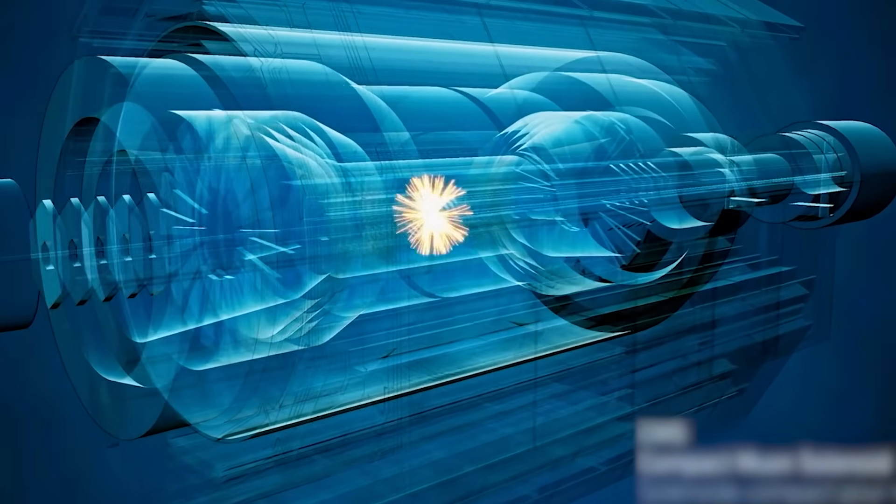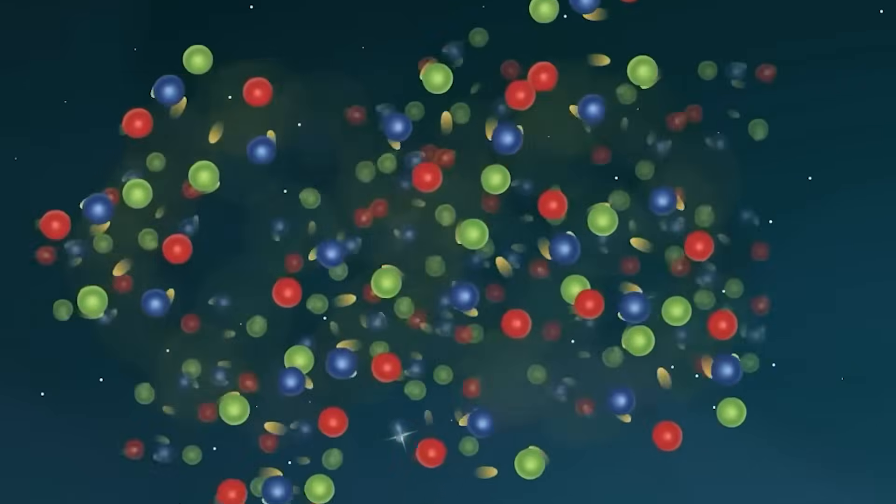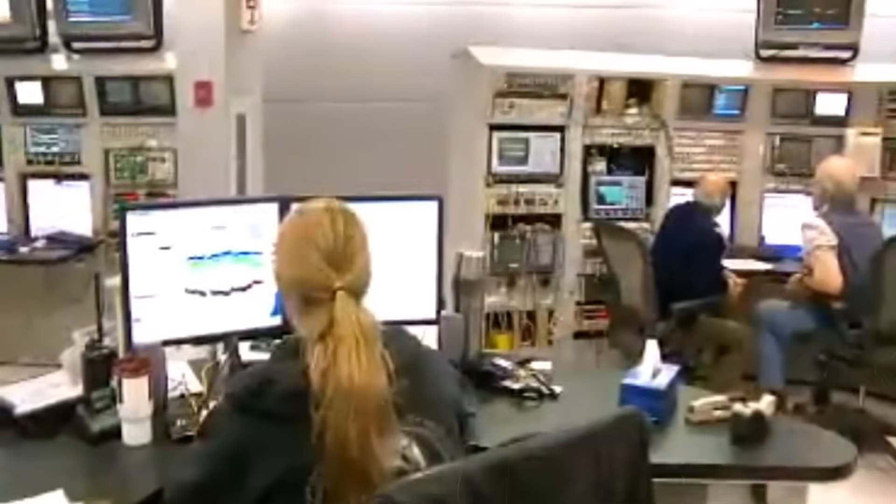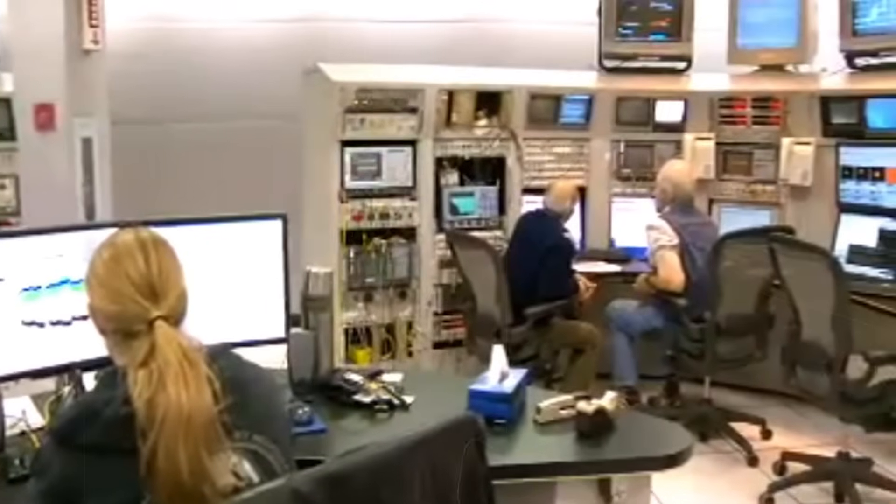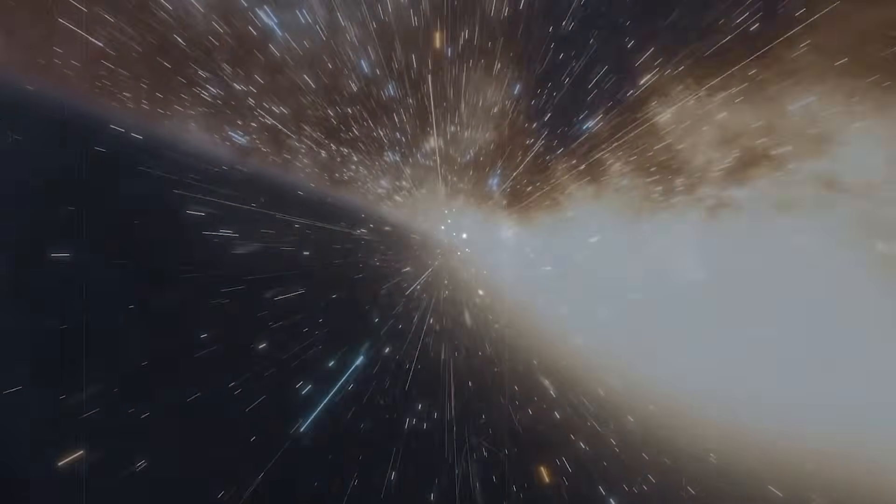If one gram of antimatter were to meet one gram of matter, the explosion could equal a nuclear bomb. In reality, the amounts used at CERN are microscopic, far too small to cause any immediate harm. But the fact remains, scientists are intentionally creating and storing one of the most volatile substances in the universe.